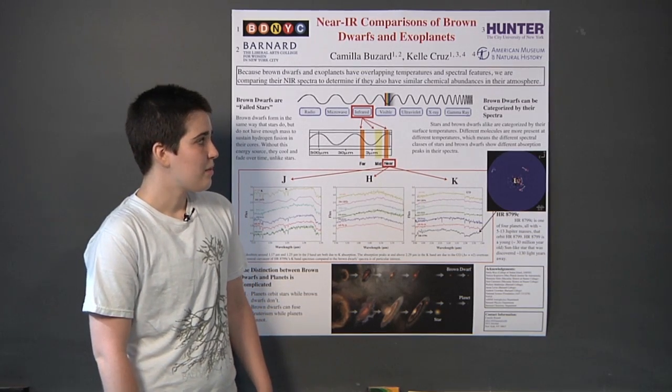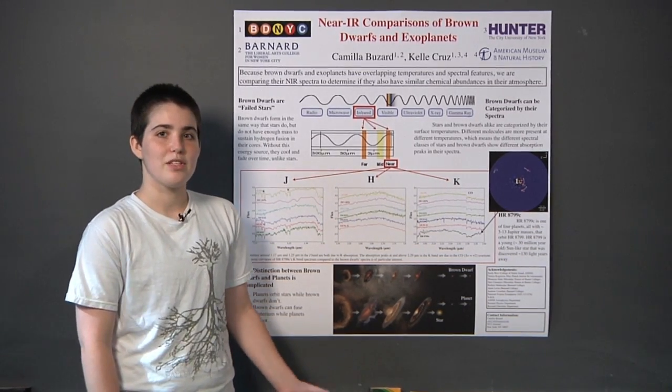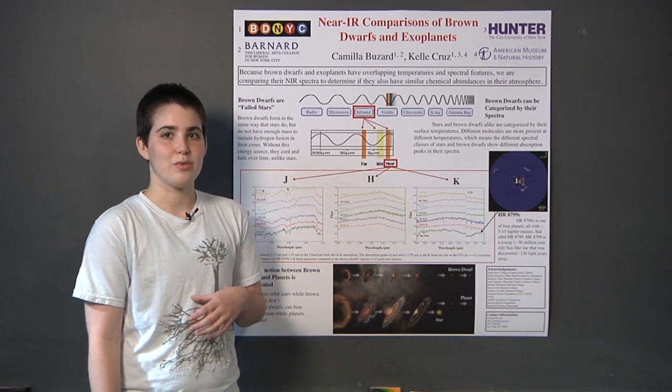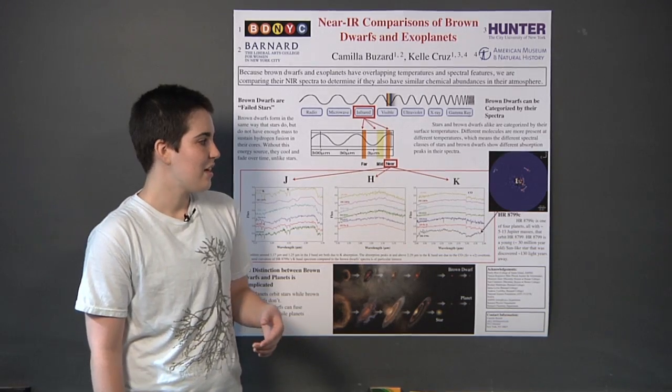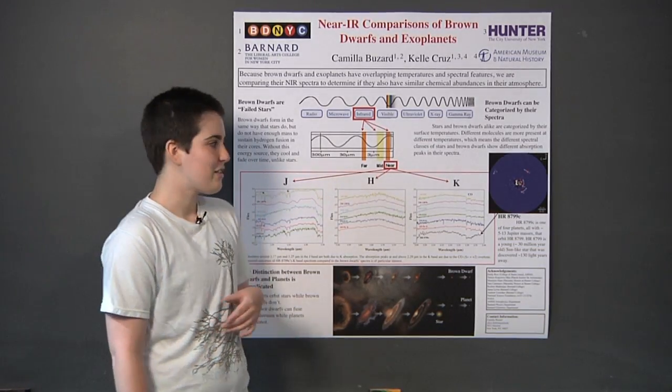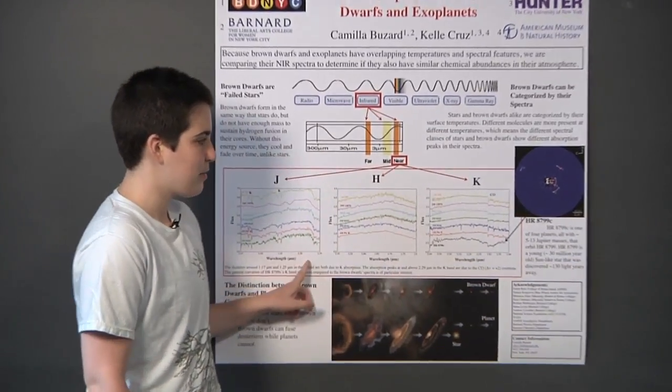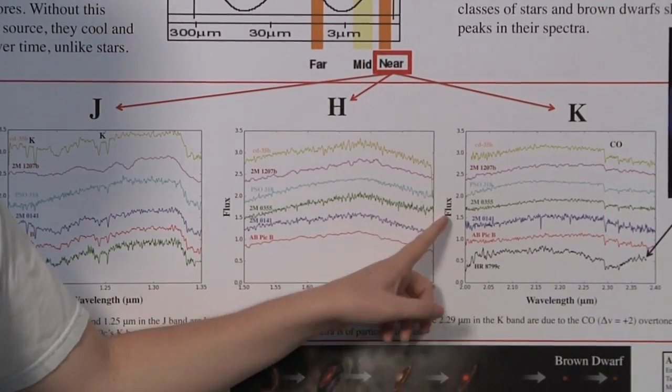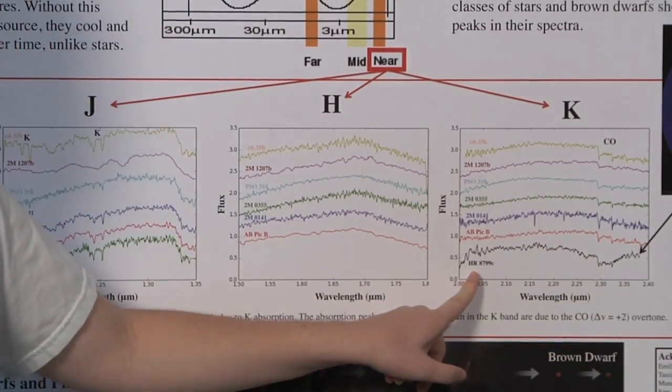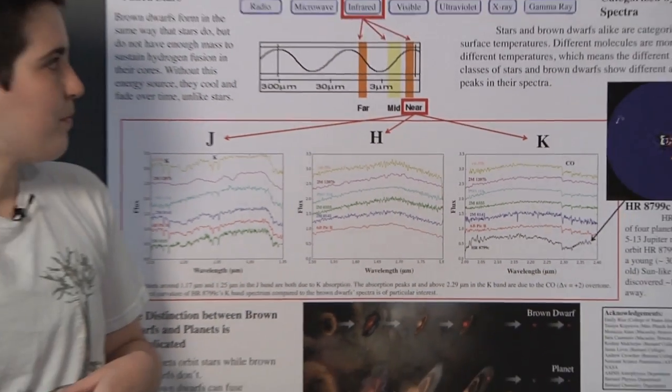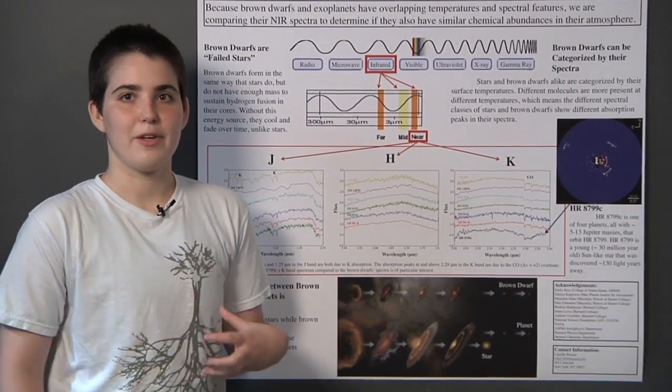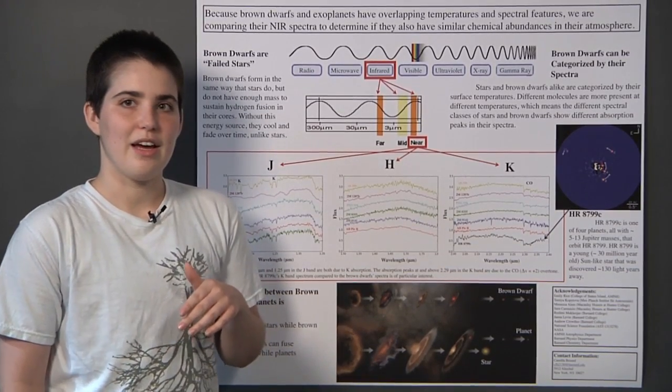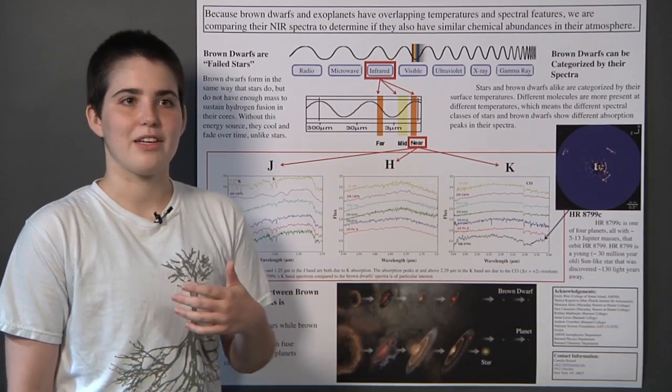My project this summer mainly was to compare several different brown dwarfs with planets because while they have all these differences, their spectra look pretty similar. These three plots in the middle are actually spectra of both brown dwarfs, and this black plot is of the planet. They're all in the infrared, which means that they're a little bit lower energy than the visible light that we can see.